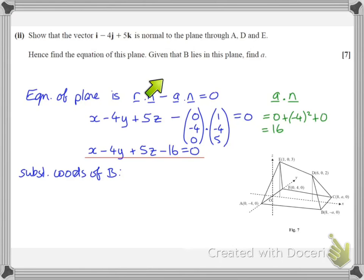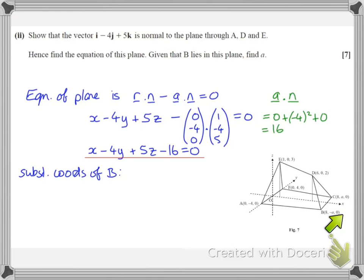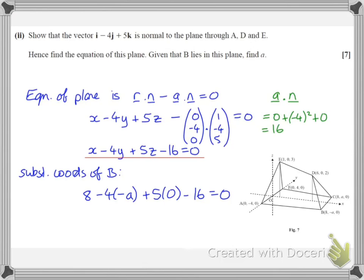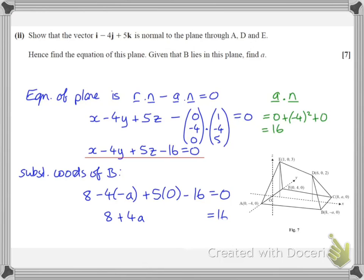We're also asked to find the value of a, given that B lies in this plane. B has coordinates 8, minus a, 0. Substituting into the plane equation: 8 minus 4×(−a) plus 5×0 minus 16 equals 0. Rearranging, we end up with a equals 2.